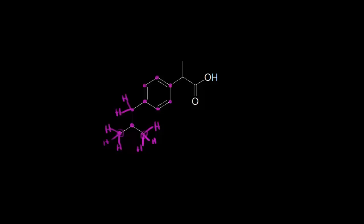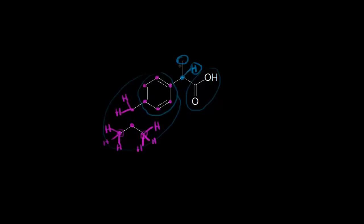Now let's look at this carbon marked in blue. There's only one hydrogen bonded to it. Considering the different groups: there's a methyl group, a hydrogen, a carboxylic acid, and the benzene ring with the rest of the molecule — that's four different groups attached to this carbon. So this carbon is a chirality center. The methyl group carbon has three hydrogens, so it's not a chiral center. The carbon with the double bond is sp2 hybridized, so it cannot be a chirality center either.